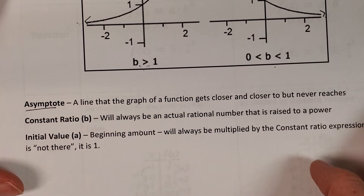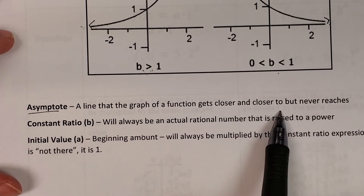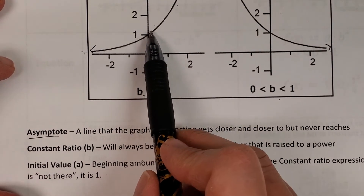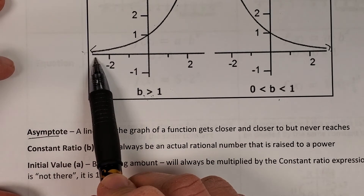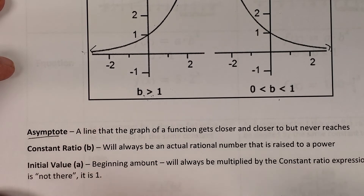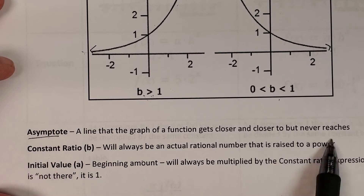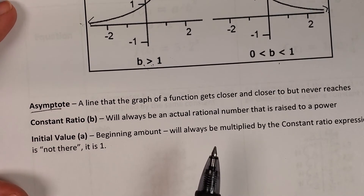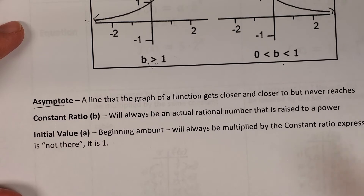An asymptote is a line that a graph gets closer and closer to but never actually reaches. You'll see the graph getting closer and closer to the x-axis but never crossing it — it gets super close but never touches it because we're always dividing by the next value. The constant ratio b is a rational number always raised to the power of x — sometimes we use t for time in word problems. The initial value is always a, that beginning amount.